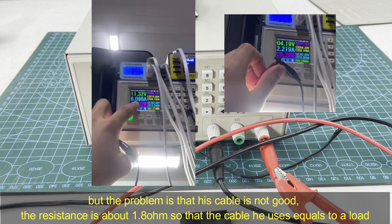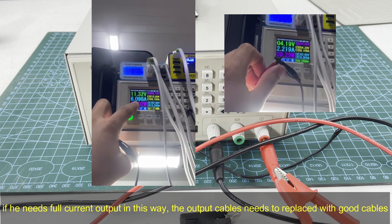But the problem is that his cable resistance is about 1.8 ohms, so the cable he used equals to a load. If he needs full current output in this way, the output cables need to be replaced with good cables.